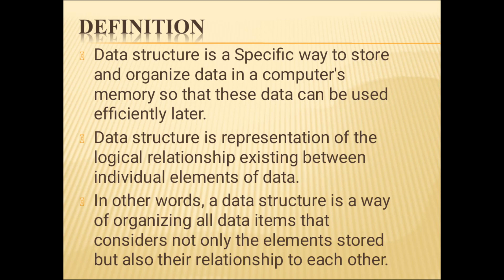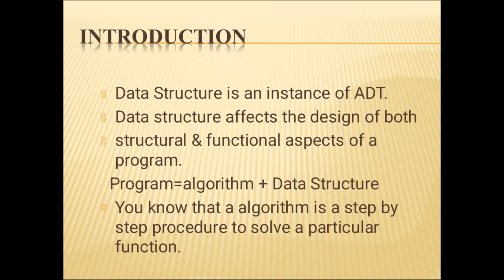Consider roll number one — you can access the name and age associated with it. The relationship is maintained so that roll number one maps to a specific name and age. If you change the roll number, you get a different name and age — this is how data structure maintains the relationship between data items.